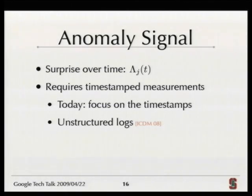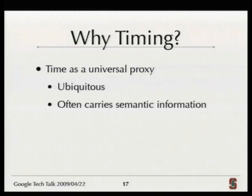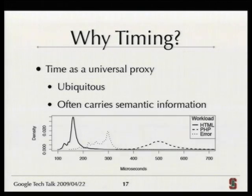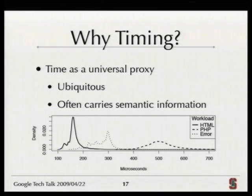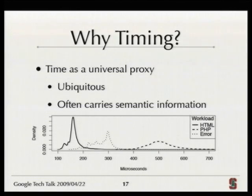Timing is a pretty universal signal — you can get it from most components, and it often carries information that's hard to get from other tools. Here's a chart showing how long it takes an HTTP server to process different kinds of pages — HTML, PHP, and 404 not-found pages. The point is that if you just know the time it took to serve the page, you already know a lot about what kind of page it was. There is semantic information encoded in those timings.